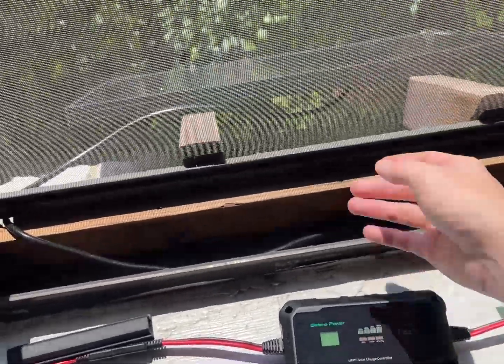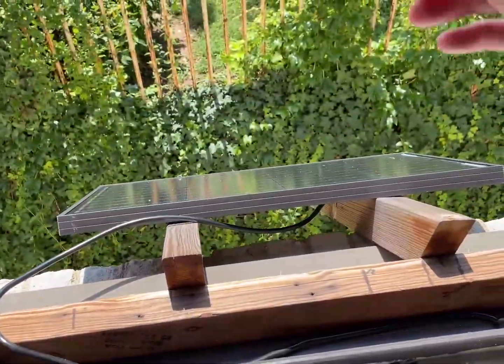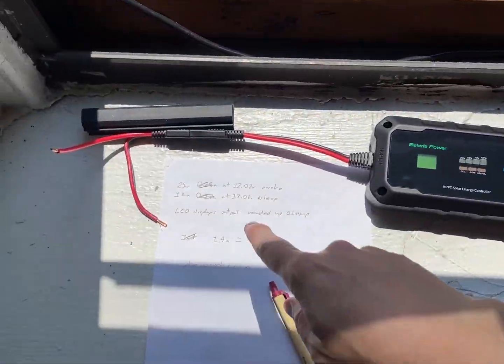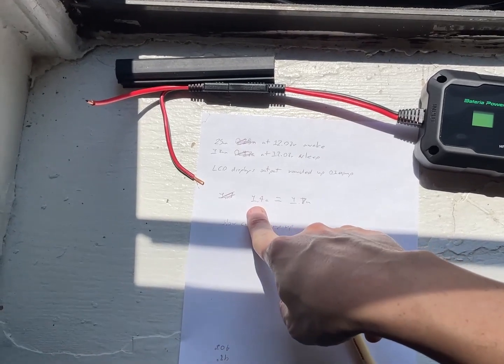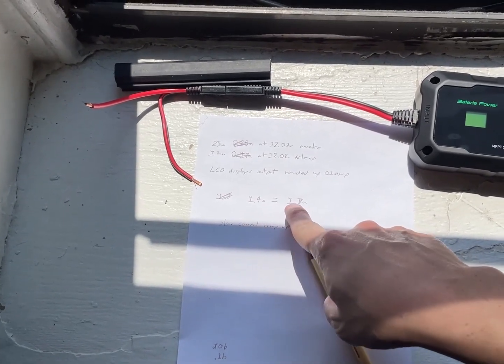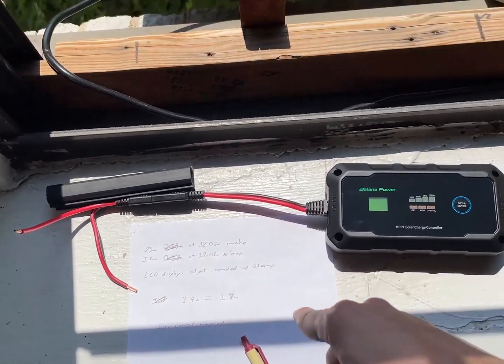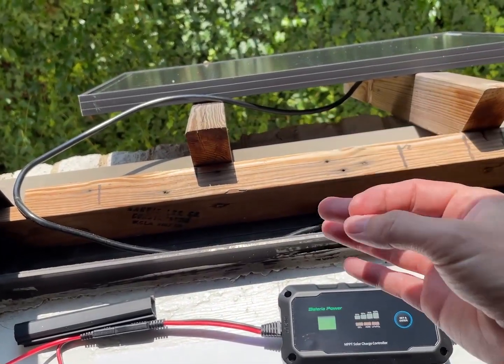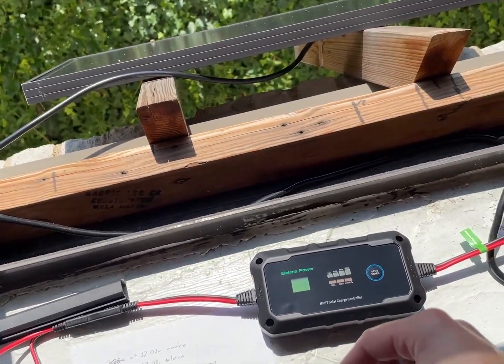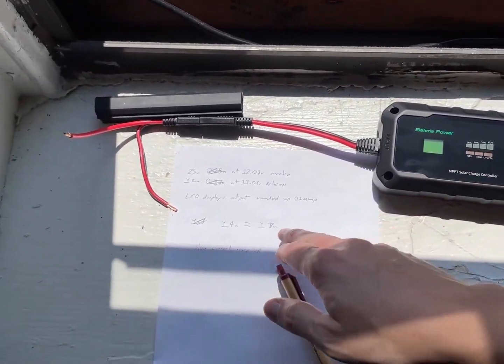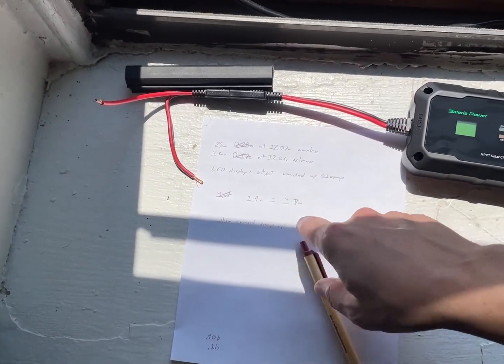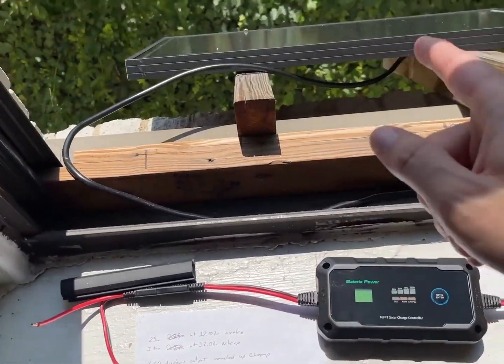And then whenever I ran it off of this 30 watt panel, it was taking in 1.4 amps and it was putting out 1.8 amps. So it was probably taking in around 16 or 17 volts and then putting out 13 volts at 0.8 of an amp. So that's a pretty good step up. You've gained some efficiency from that. That's definitely working as an MPPT charge controller.